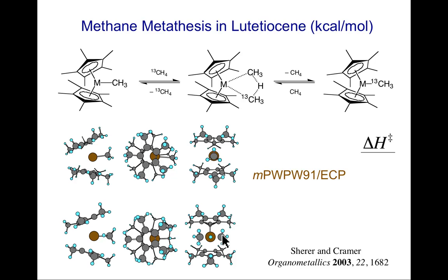And so delta H double dagger, if you do a calculation with a generalized gradient approximation functional and an effective core potential, you predict an enthalpy of activation of 20.3 kcals per mole. And from an Eyring plot done by experimentalists who studied this reaction, the enthalpy of activation is 11.6 kcals per mole. So that's a huge difference. It's almost 9 kcals per mole. That's a pretty bad day for a theorist. So one scratches one's head and wonders what's going on. That's a pretty reputable functional, and this was a pretty decent basis set.